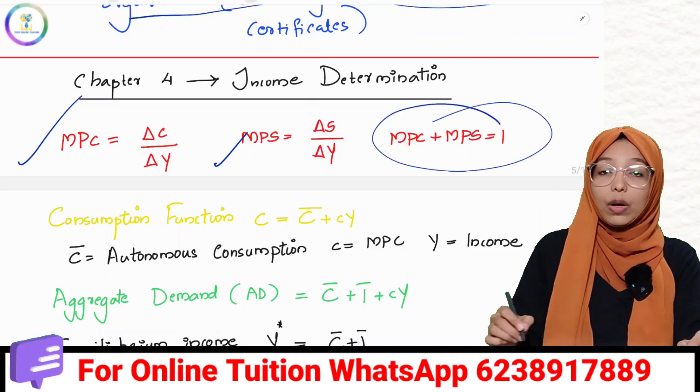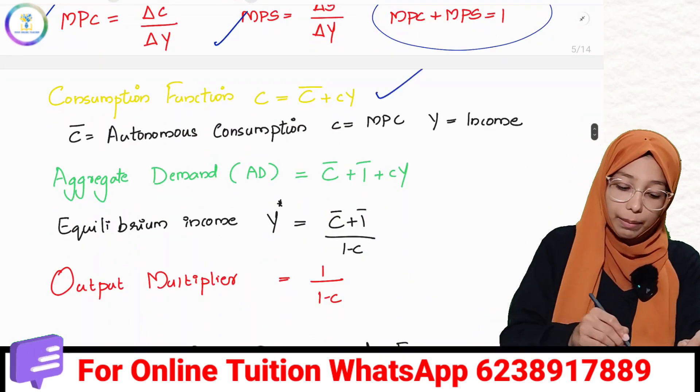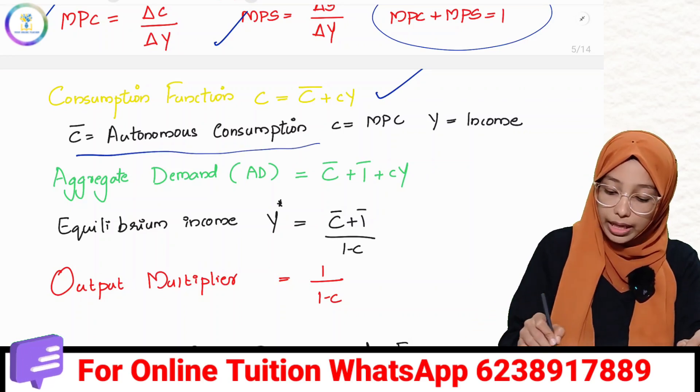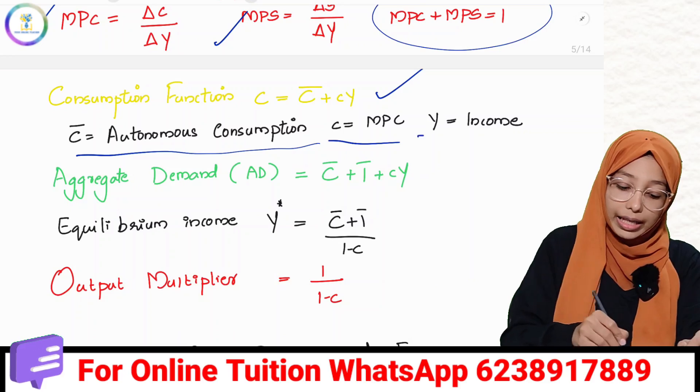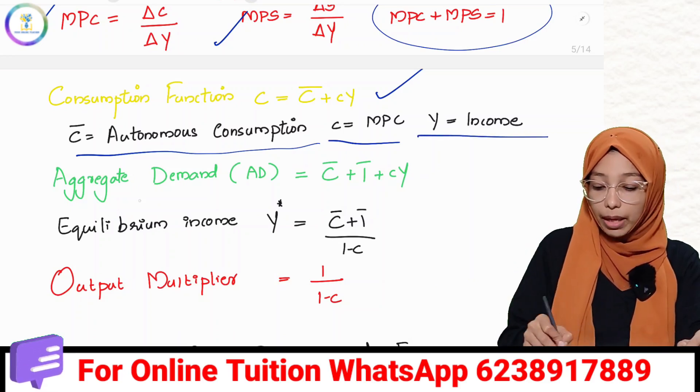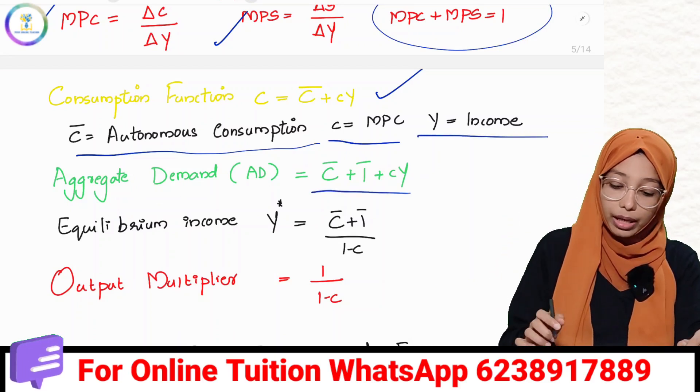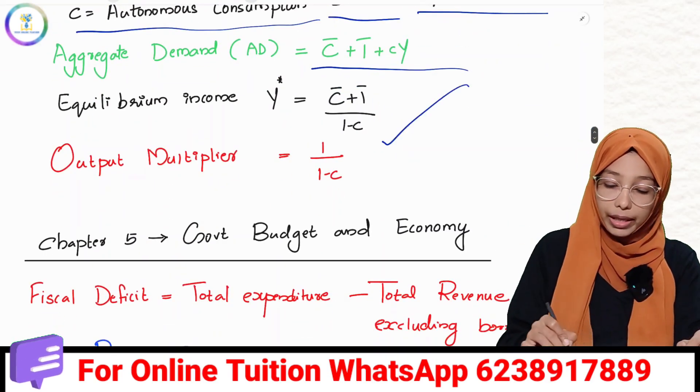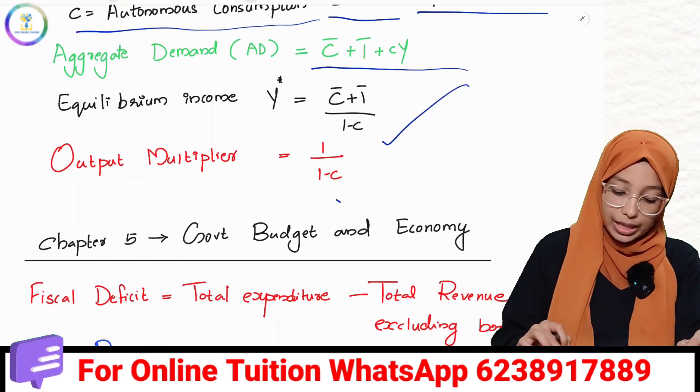Consumption function: C equals C bar plus cY. C bar is autonomous consumption, c is MPC, Y is income. Aggregate demand AD equation: C bar plus I bar plus cY. Equilibrium is C bar plus I bar divided by 1 minus c. Output multiplier is 1 by 1 minus c.